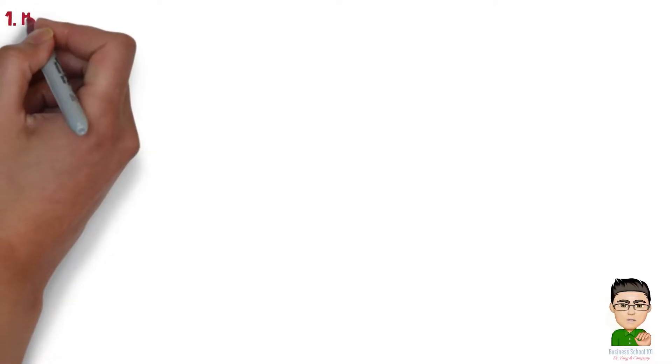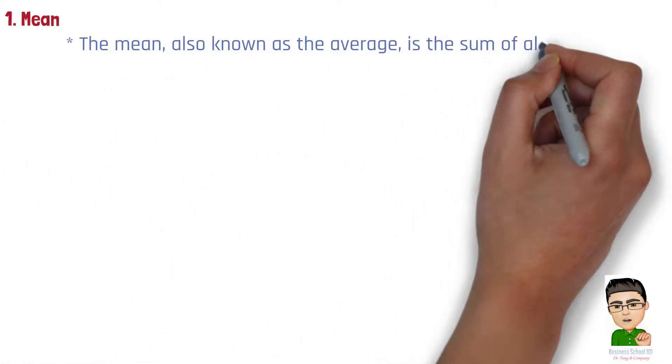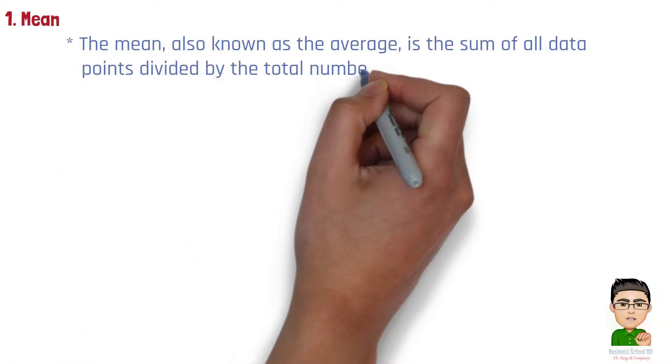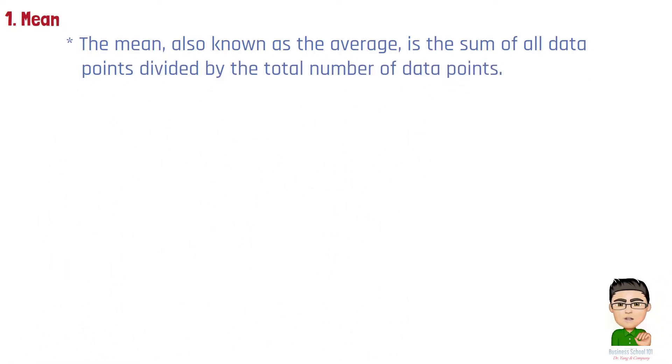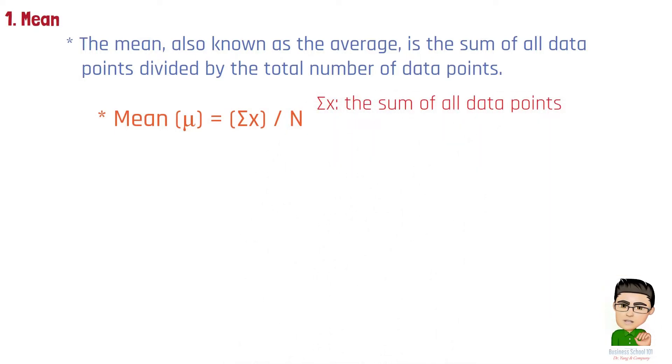Section 1: Mean. The mean, also known as the average, is the sum of all data points divided by the total number of data points. The formula to calculate the mean is: Mean (μ) = (Σx) / N, where the sum of x represents the sum of all data points, and N is the number of data points.